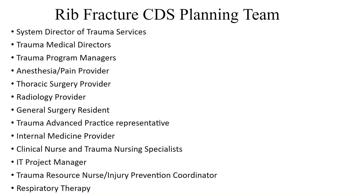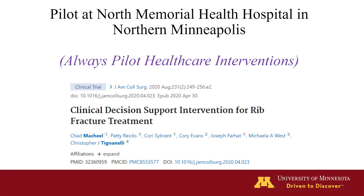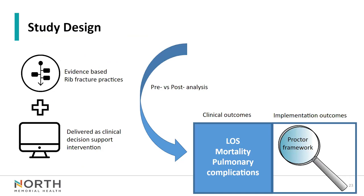We generated a multidisciplinary planning team — the system director of trauma, various specialties that treat rib fracture patients, IT, nursing, and respiratory therapy. We reviewed the evidence base and came up with an evidence-based bundle of treatment. We piloted it at North Memorial Hospital — always pilot QI interventions. We integrated the evidence-based practices and delivered it as a clinical decision support system — giving physicians nudges like 'this patient should go to the ICU' or 'this patient should get an epidural.' These are evidence-based nudges to remind providers of best practices.